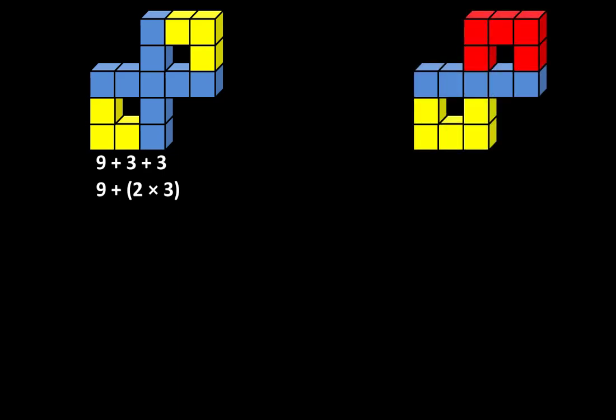or it can be described as nine plus two groups of three. The second structure can be described as five plus five plus five, or it can be described as three groups of five.